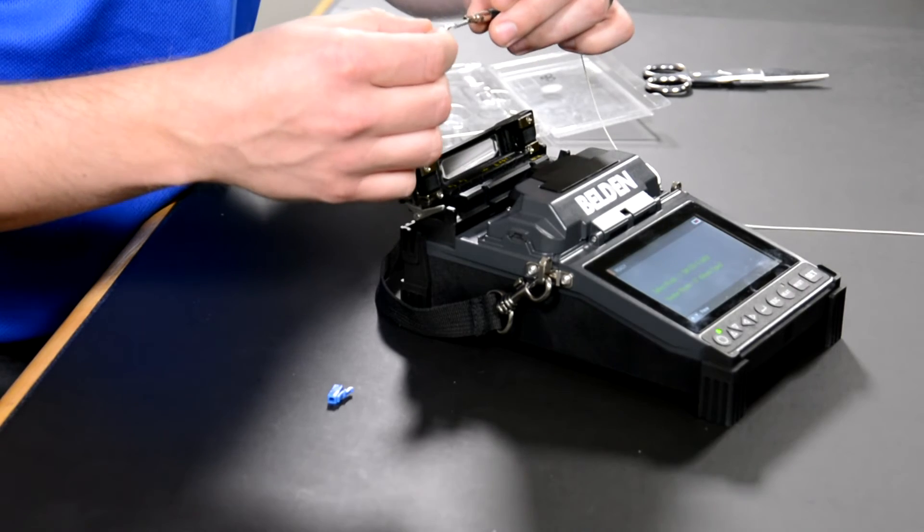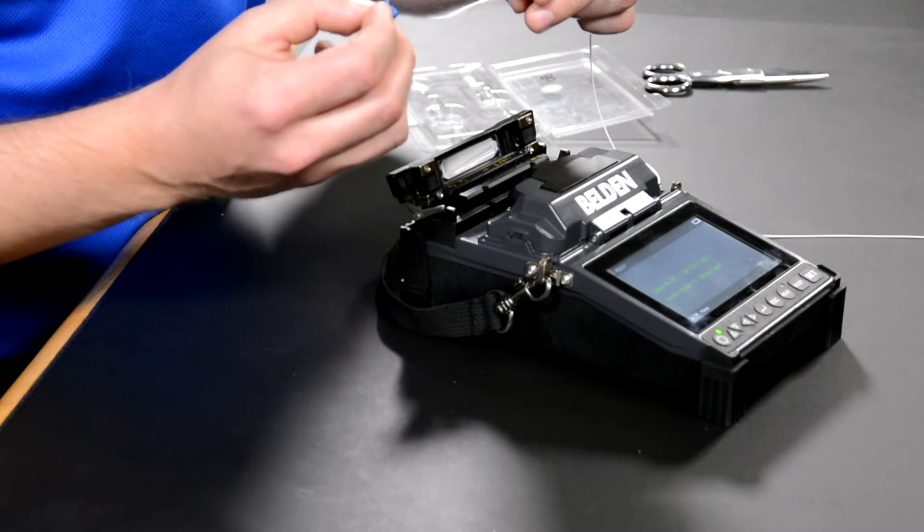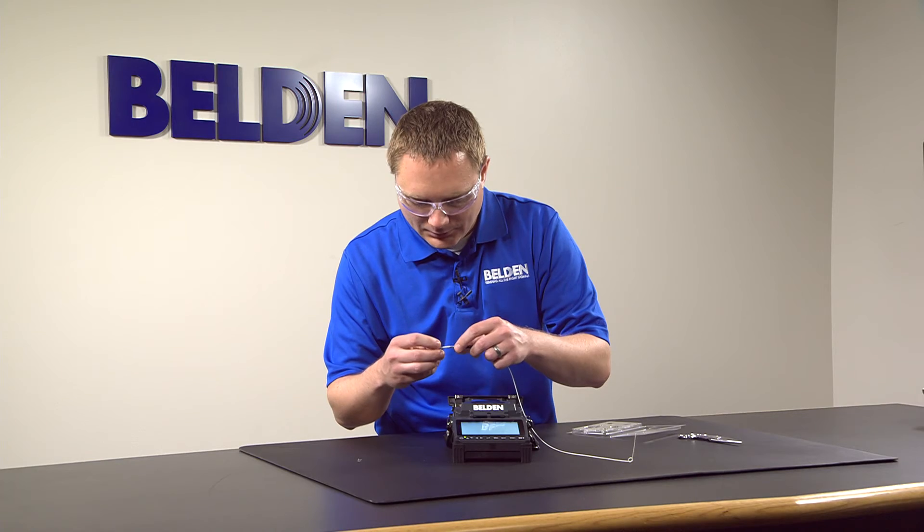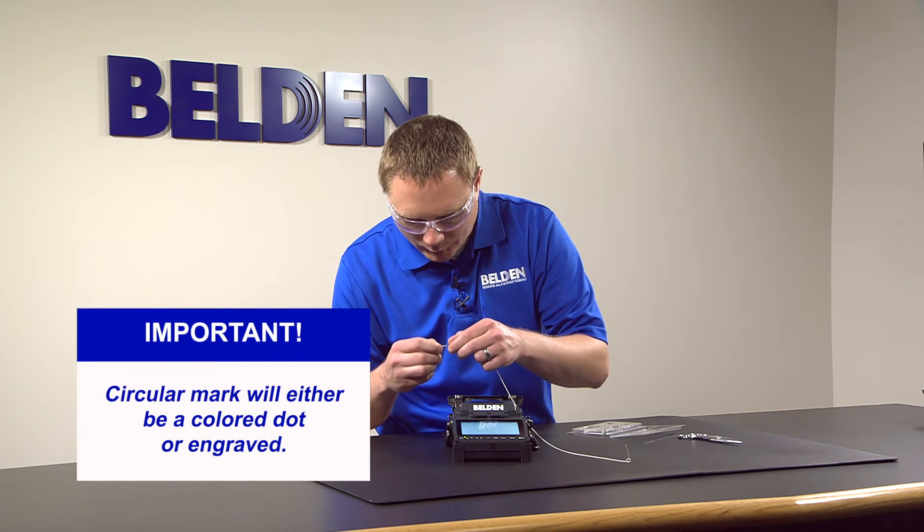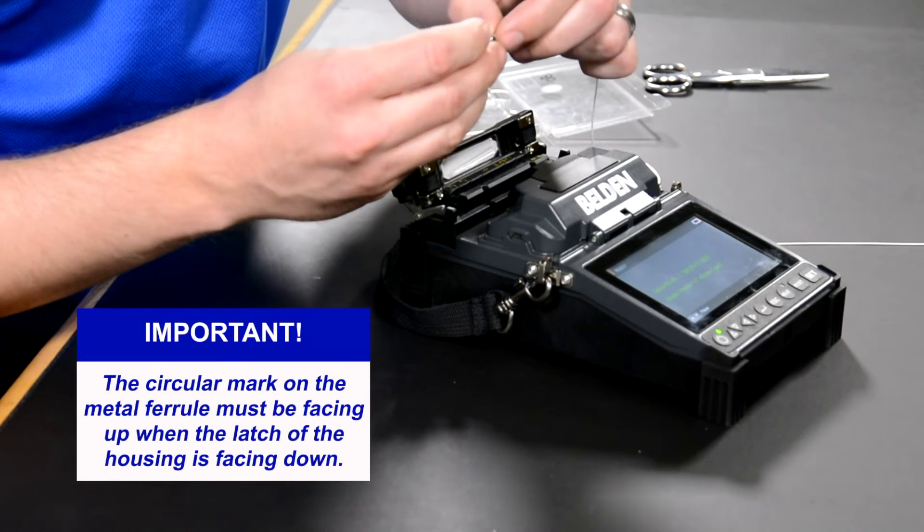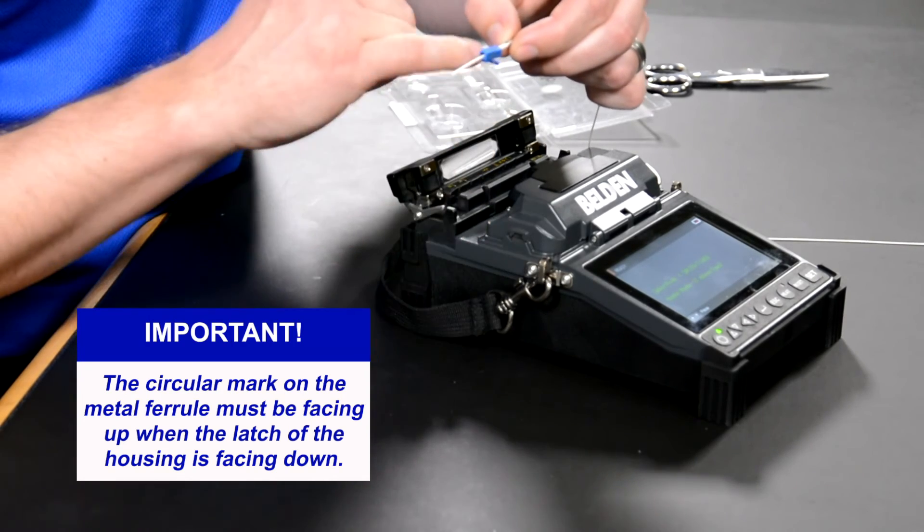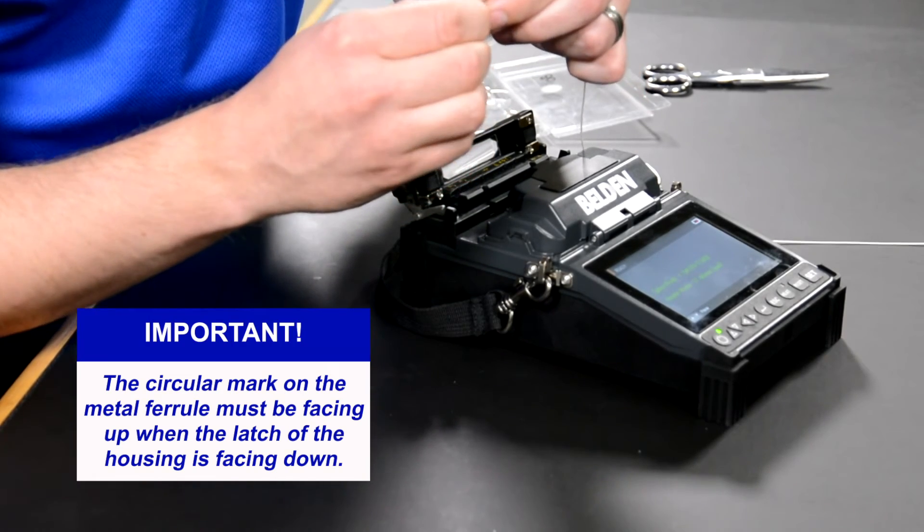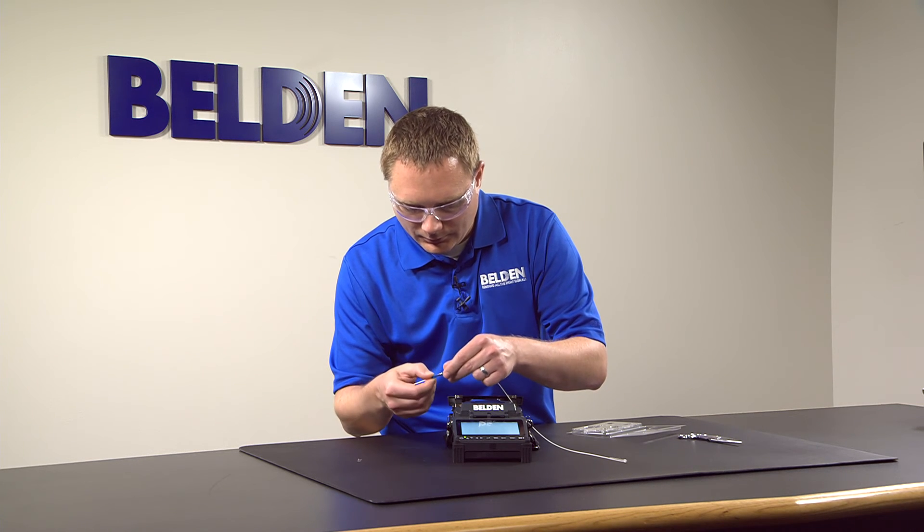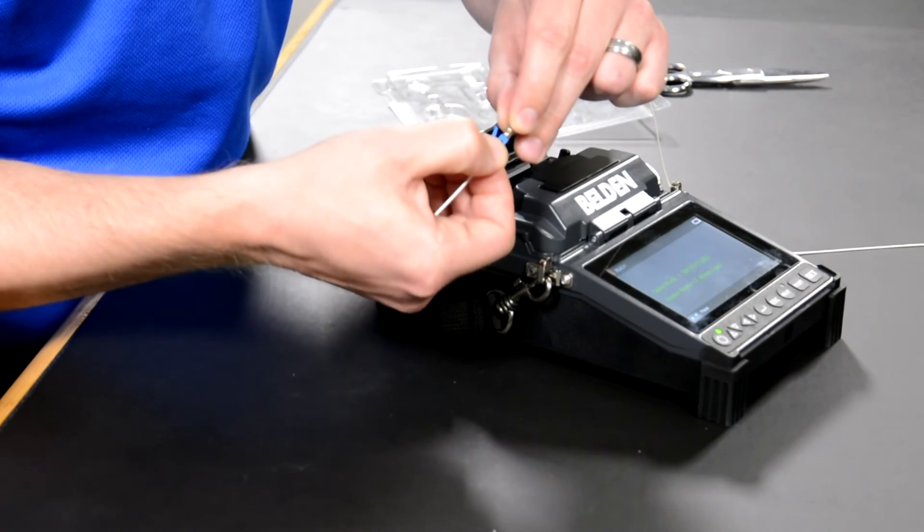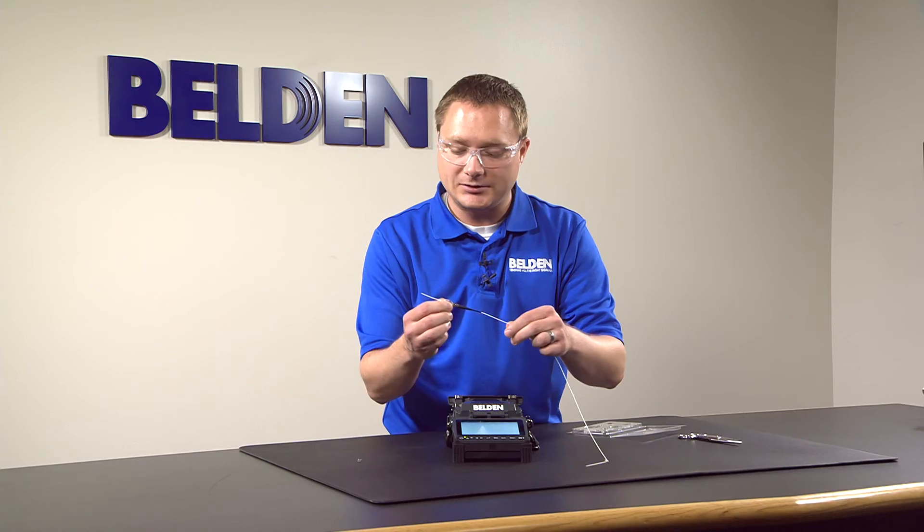Slide the boot up over that splice to protect it and then grab this plastic housing and slide this over the stub. Now an important step here is that on the metal ferrule you will see a blue dot. That blue dot should be facing up and the latch on the housing should be facing down. We're going to align the latches with the latch windows in the blue part here and snap those together. Once those snap together the assembly is complete.